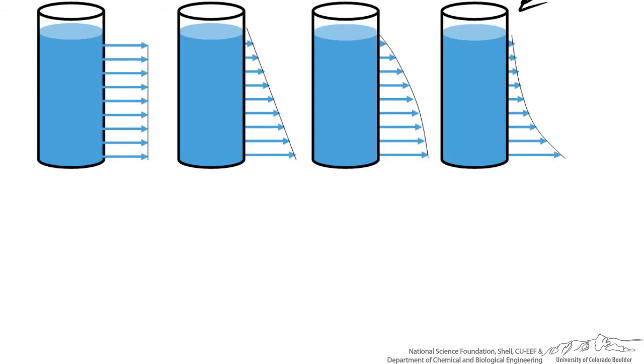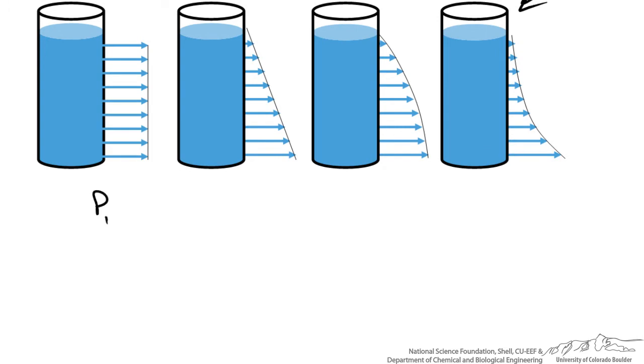If we start with the Bernoulli equation, which says that our pressure at some point plus our kinetic term, 1/2 ρ v₁ squared, plus our elevation term, which is the specific weight of the fluid times our elevation z₁. This is constant along a streamline for an inviscid incompressible fluid.